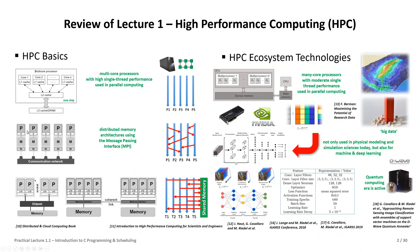Each processor has its own memory, and the challenge is that one processor cannot simply access the cache, RAM, or memory of another processor. Hence, we always have to go through a communication network that enables us to access the memory of another processor. This is required for real parallel computing. In lecture two you will learn directives like MPI send-receive that can take data from one memory and put it in the memory of another processor.